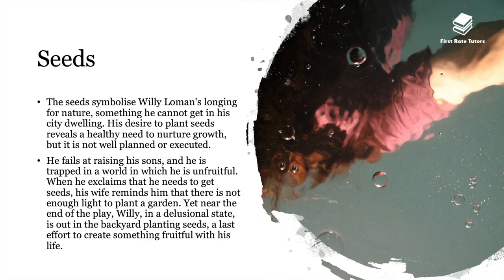Seeds are another important symbol — they symbolise Willy Loman's longing for nature, something he can't get in his city dwelling. His desire to plant seeds reveals a healthy need to nurture growth, but it's not well planned or executed. He fails at raising his sons and is trapped in a world in which he is unfruitful. When he explains that he needs to get seeds, his wife reminds him there's not enough light to plant a garden. Yet near the end of the play, Willy in a delusional state is out in the backyard planting seeds — a lost effort to create something fruitful with his life.